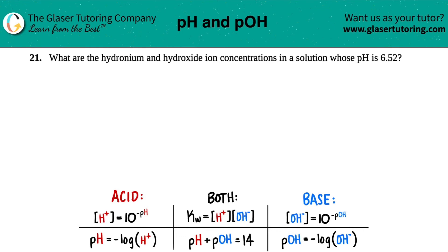Number 21: what are the hydronium and hydroxide ion concentrations in a solution whose pH is 6.52? So basically the only thing that they gave us was that we have a pH value of 6.52.